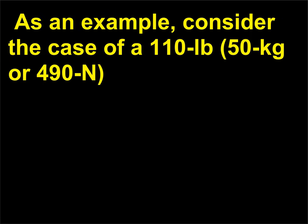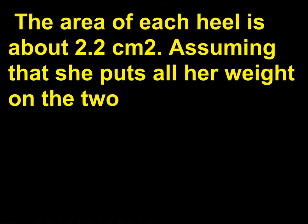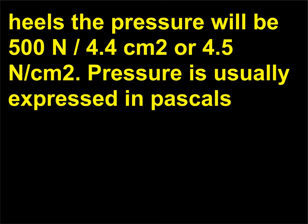As an example, consider the case of a 110 lb, 50 kg or 490 N woman who first wears shoes with heels 1.5 cm by 1.5 cm. The area of each heel is about 2.2 cm squared. Assuming that she puts all her weight on the two heels, the pressure will be 500 N slash 4.4 cm squared or 4.5 N slash cm squared.